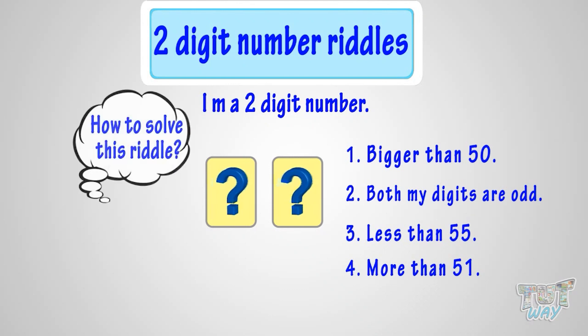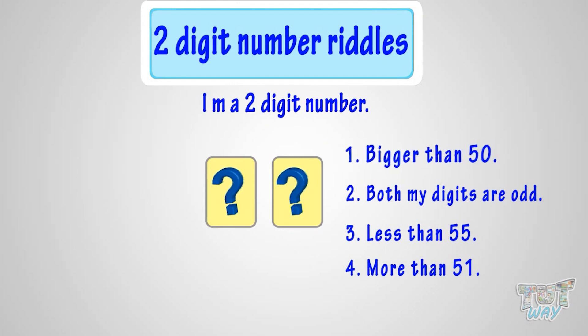Let's learn how to solve such riddles. They have given four clues in the question, so use each clue one by one to solve the riddle like this. I am a two-digit number, bigger than 50, so the first digit of the two-digit number is 5.